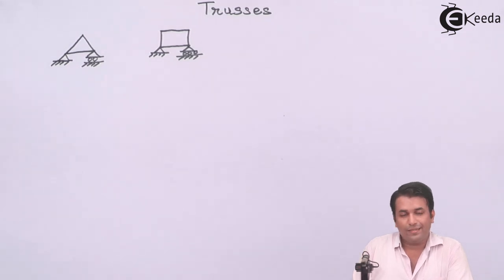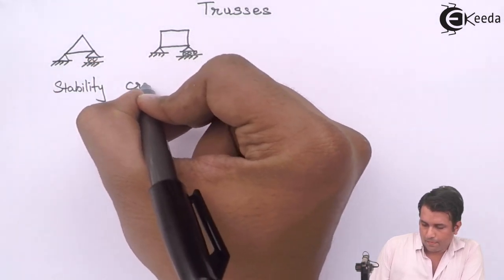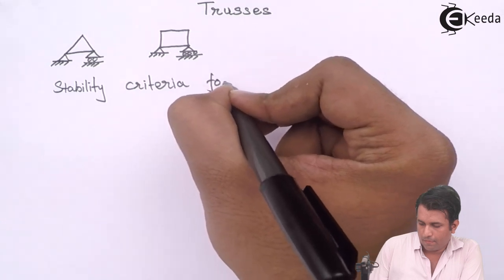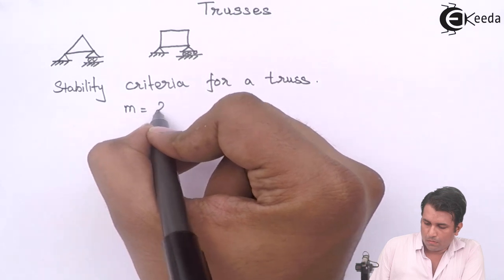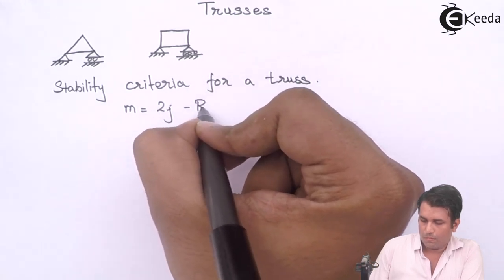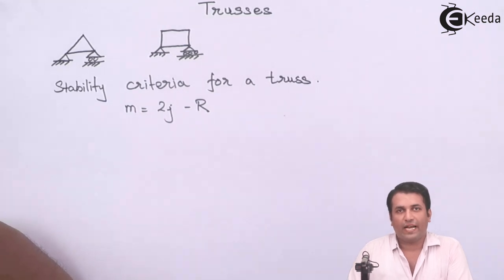What is the stability criteria for a truss? M equal to 2J minus R. What are these alphabets given over here? M is the number of members, J is the number of joints, and R is the number of reactions.